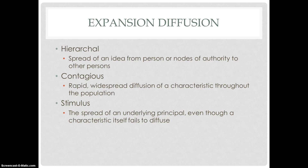Contagious diffusion is the rapid widespread diffusion of a characteristic throughout the population. An example of this can be a disease. Stimulus diffusion is the spread of an underlying principle even though a characteristic itself fails to diffuse. An example of this has happened many times in the tech industry, where an actual tech product does not meet consumer standards and does not flourish in the consumer market, but a new feature or principle it brings actually thrives and is used in many other devices.